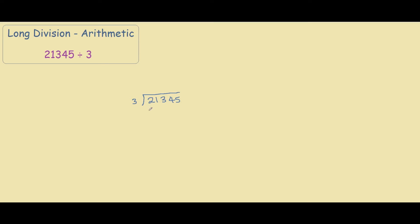So our first step in long division is to look at the first number, which is 2. We ask ourselves how many times can 2 be divided by 3 and leave us a whole number. In this case, 0 times. So we go on to the next number, 21. We ask ourselves how many times can 21 be divided by 3 and give us a whole number. The answer is 7, because 3 times 7 equals 21.